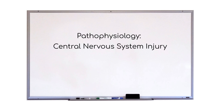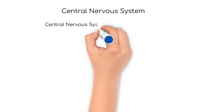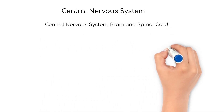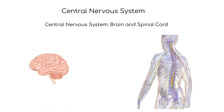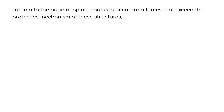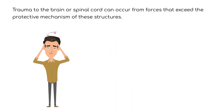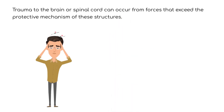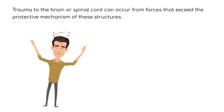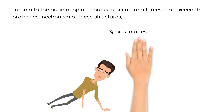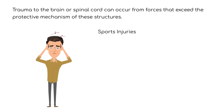Let's learn about traumatic injury to the central nervous system. The central nervous system consists of the brain and spinal cord. Trauma to the brain or spinal cord can occur from forces that exceed the protective mechanism of these structures.